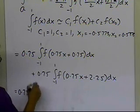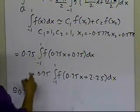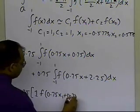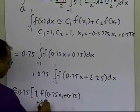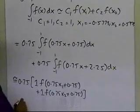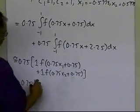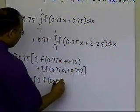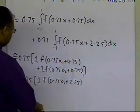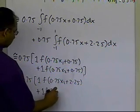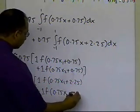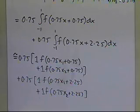So this will become 0.75 times c1, this is an approximation, times c1 which is 1, times the value of the function at x1, plus 1 times the value of the function at x2 of the formula for the Gaussian quadrature formula. And the next one is 0.75 times 1 times the value of the function at 0.75 x1 plus 2.25, plus 1 times the value of the function at 0.75 x1, x2, plus 2.25. So that's going to give us the approximation of the integrals.